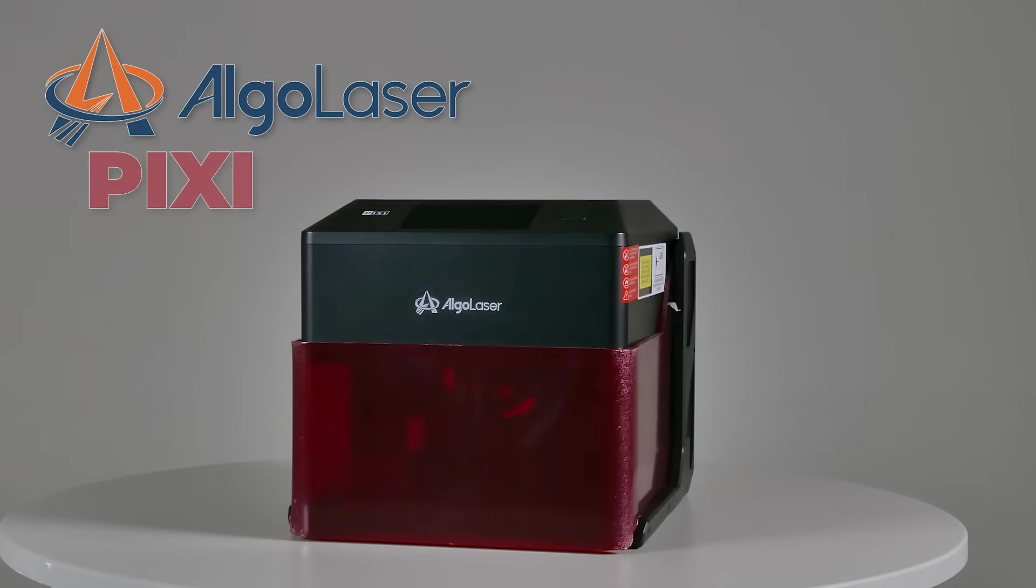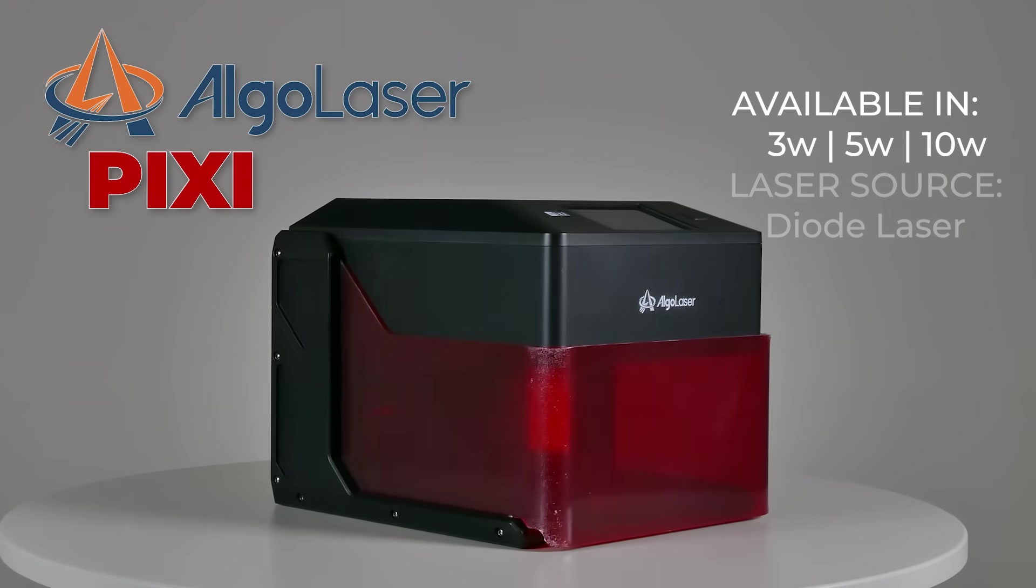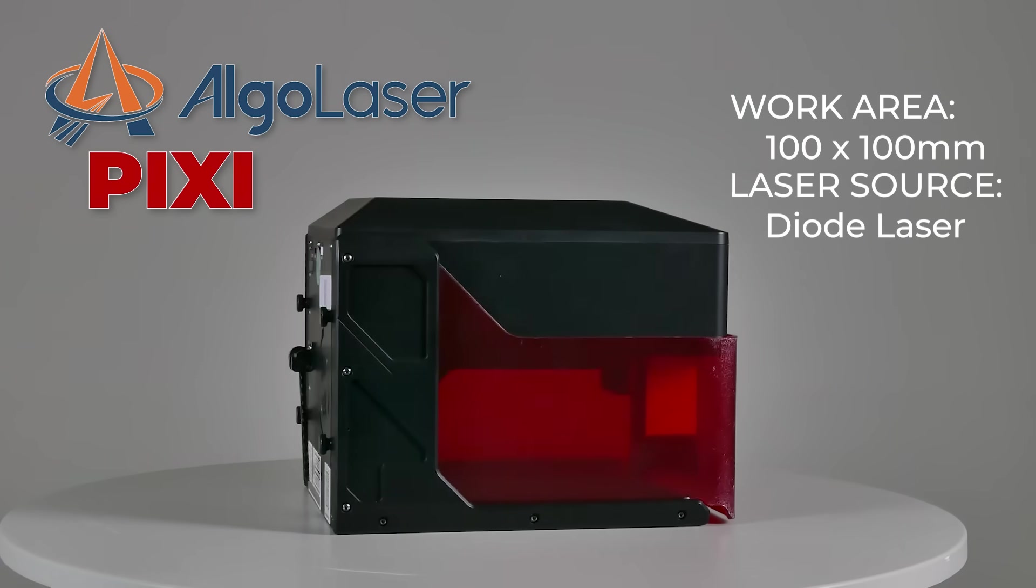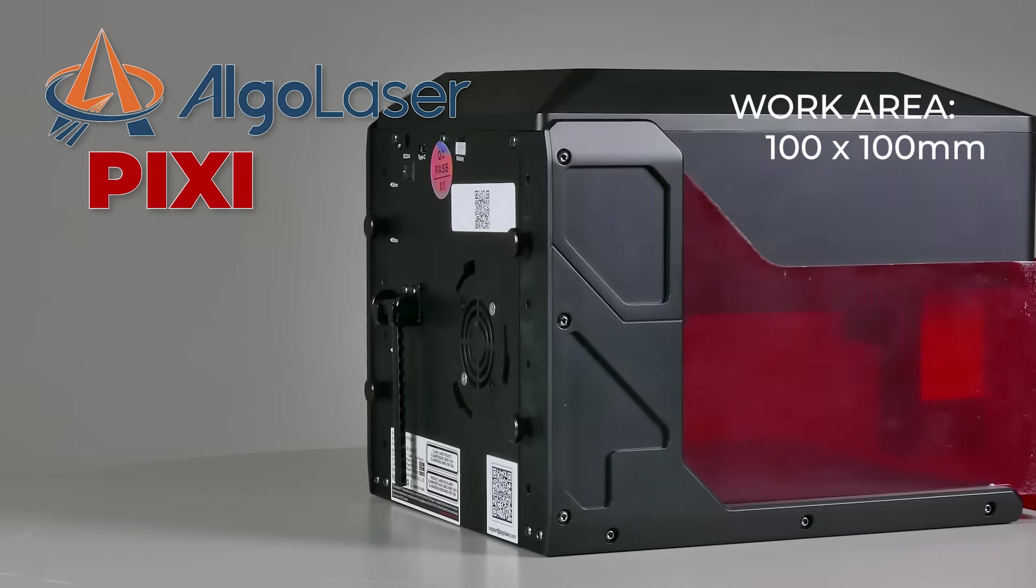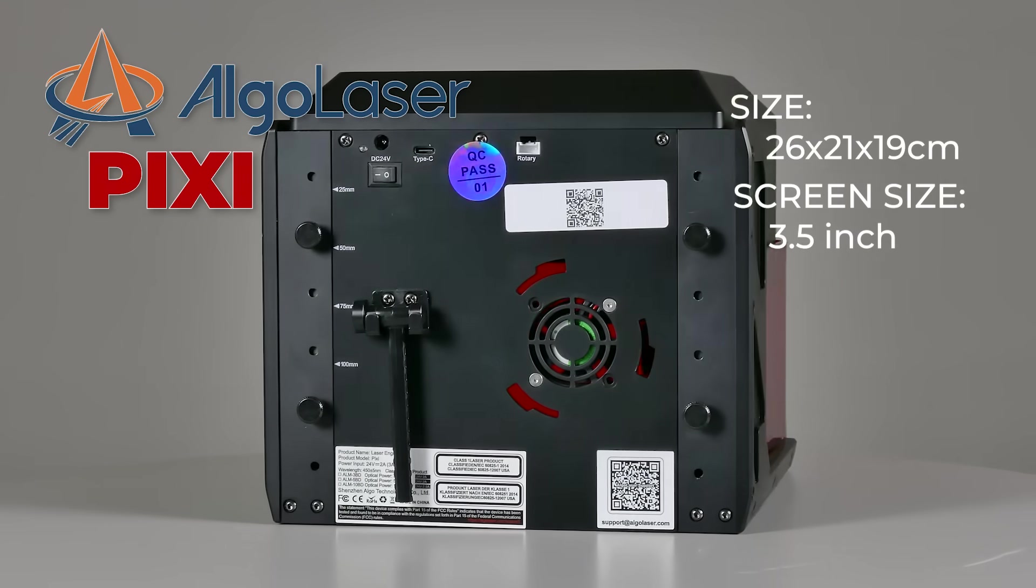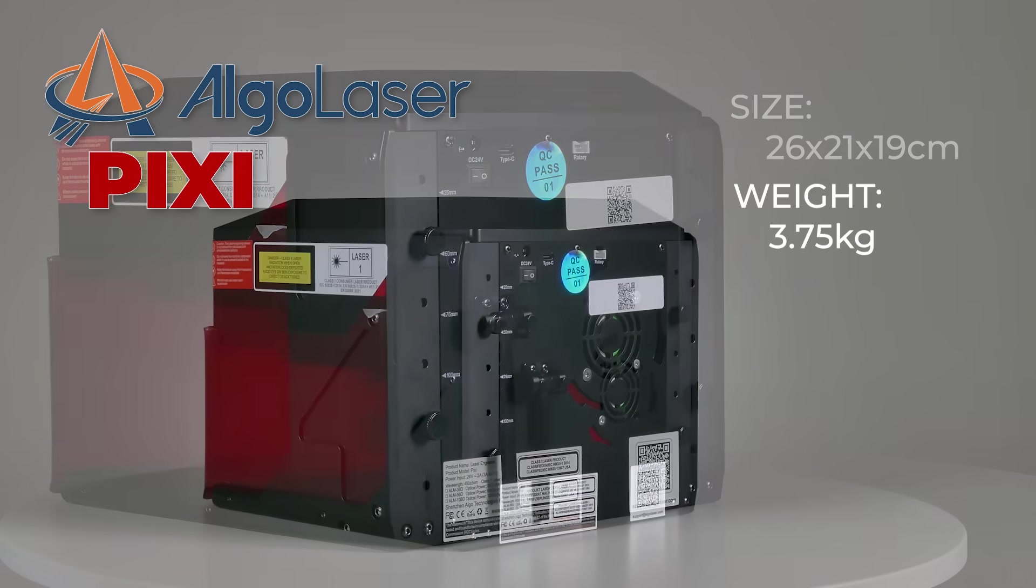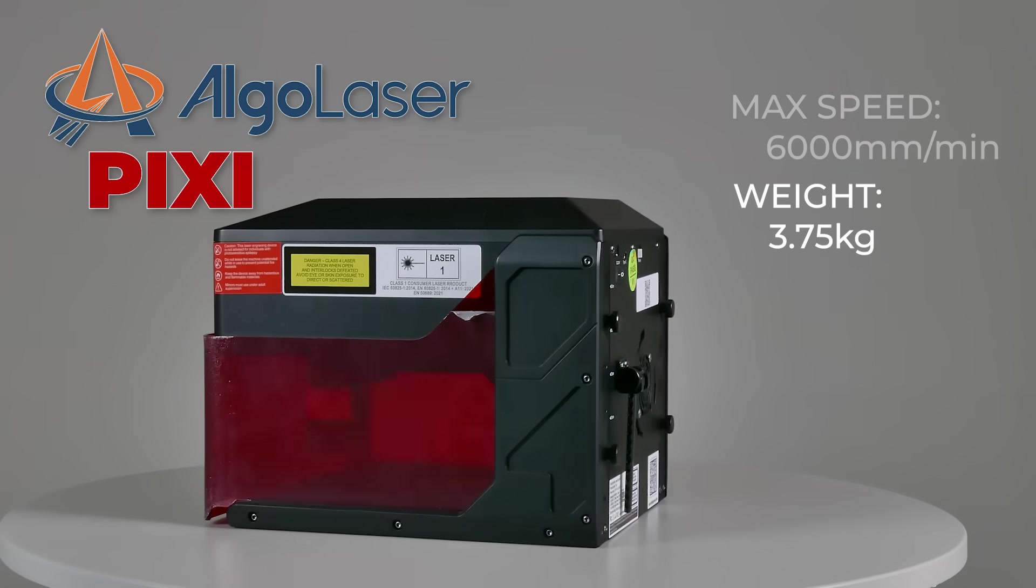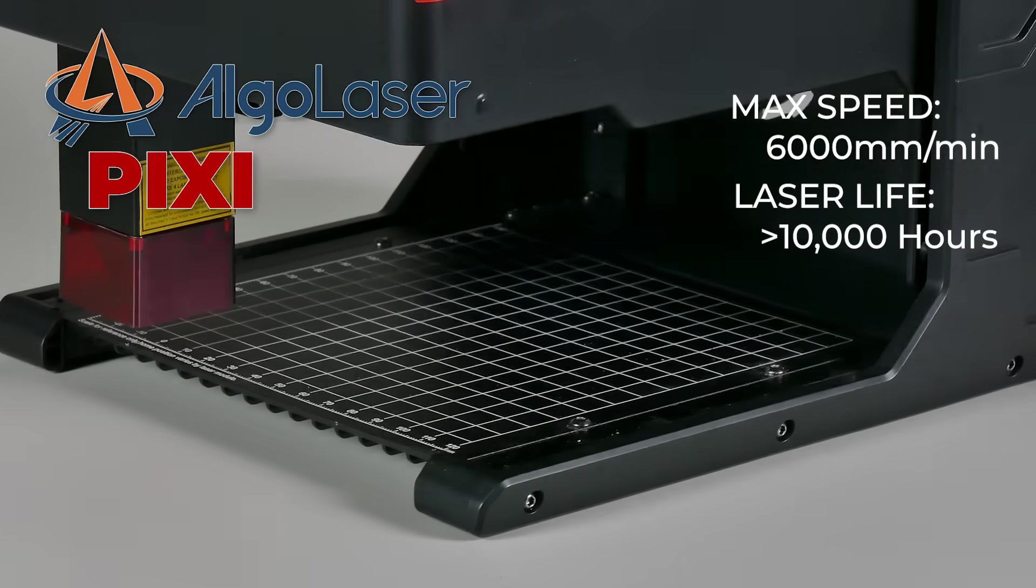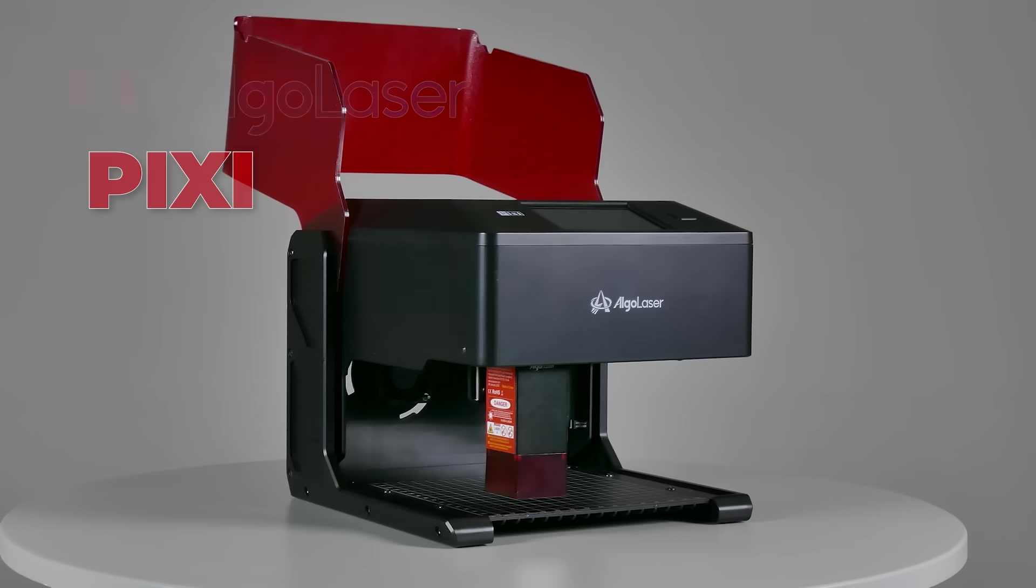Before we go any further, let's check out some of the specs of the Pixie. Now it's available in three, five, or ten watt versions and it is a diode laser. The work area is 100 by 100 millimeters, which is about four inches. Screen size is 3.5 inches and as you can see by dimensions, it's a tiny little unit. Weighs in at 3.75 kilos. It has a very impressive speed of 6,000 millimeters per minute and the laser life lasts about 10,000 hours.